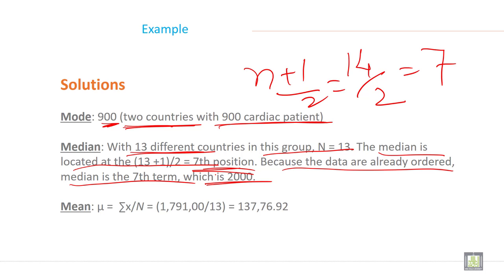And in case of mean, the formula for mean is equal to sigma x divided by n for these type of data because this is raw data. So add all the numbers, all the 13 numbers and divide it by 13. You will get this.